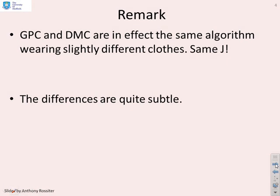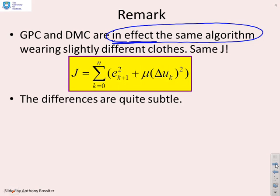GPC and DMC then are in effect, and this is really important, the same algorithm wearing slightly different clothes. They use the same performance index. There it is, the sum of the tracking errors and the sum of the control changes.